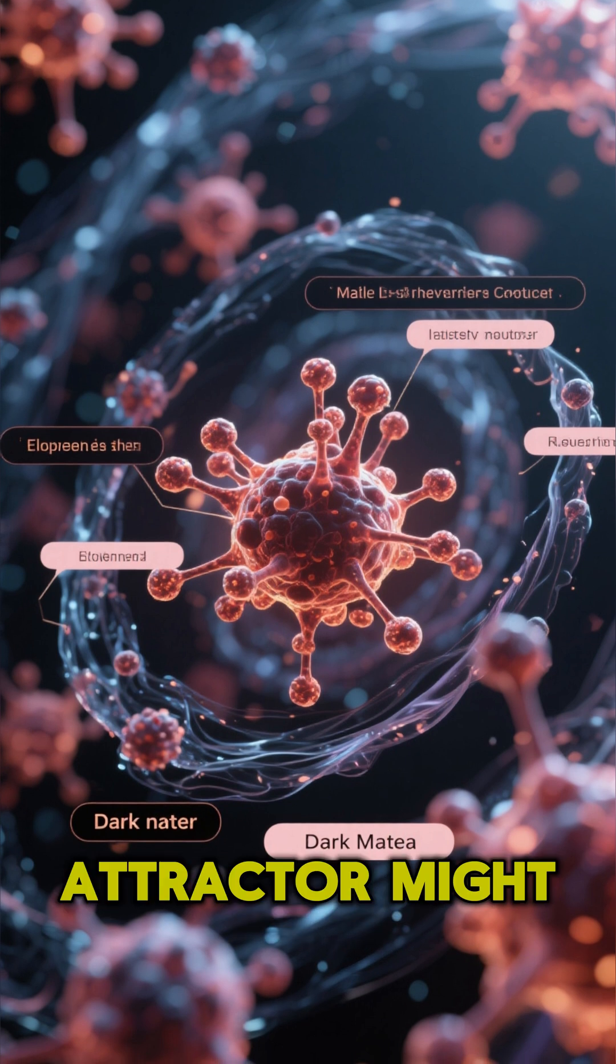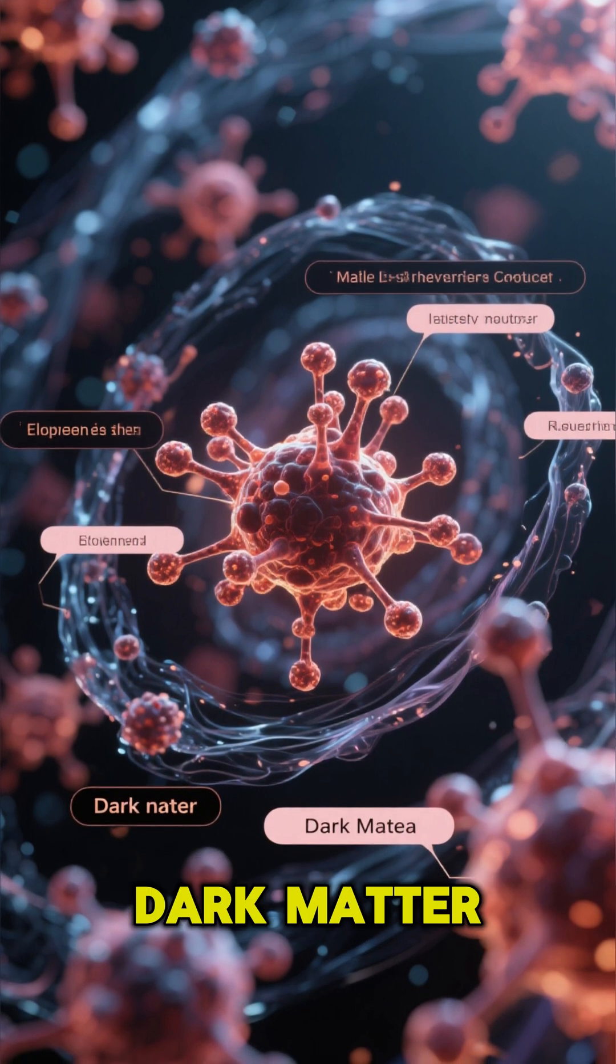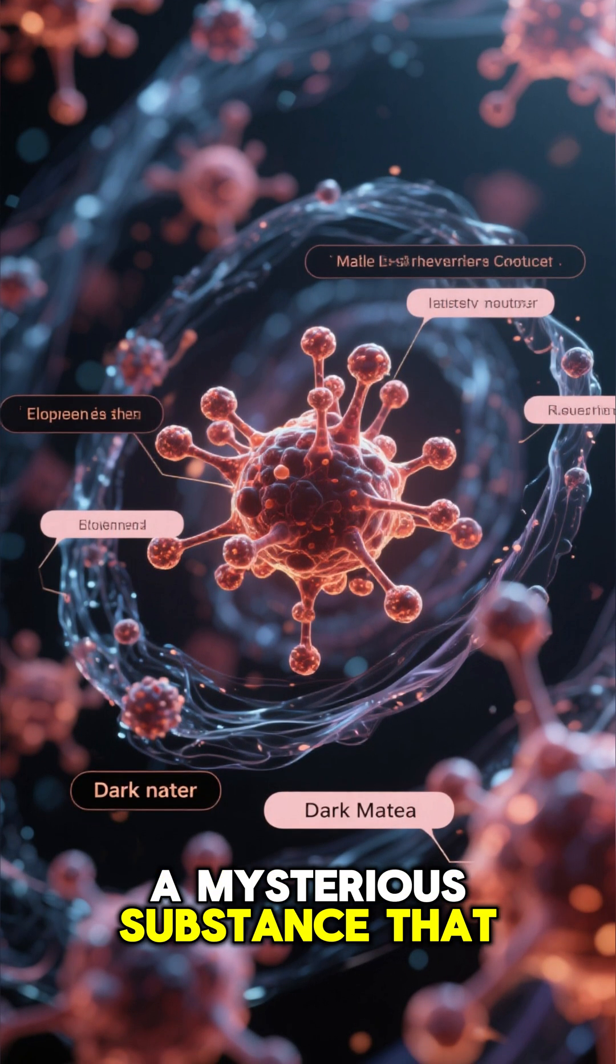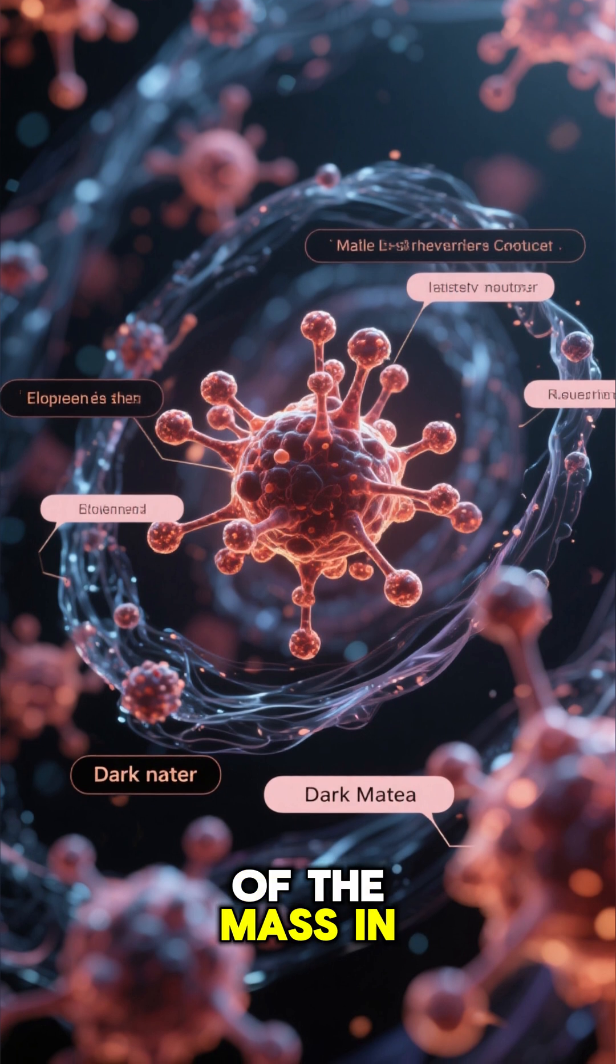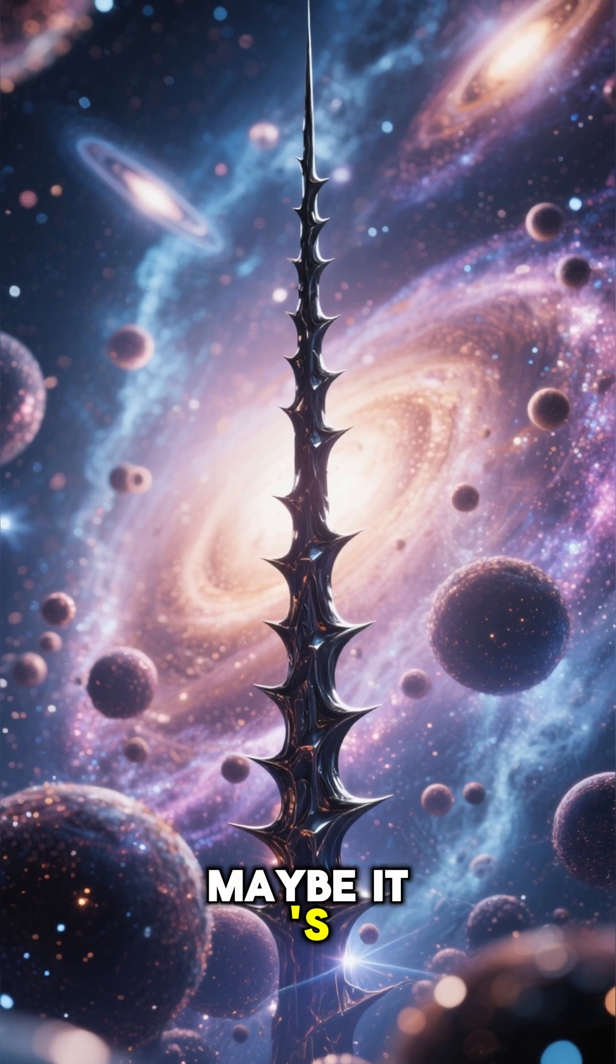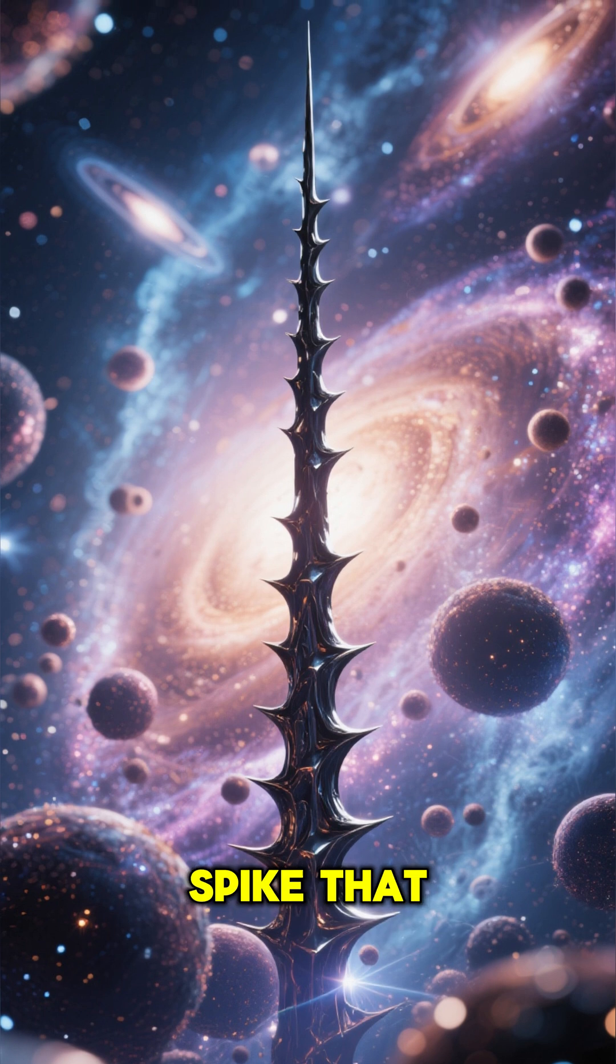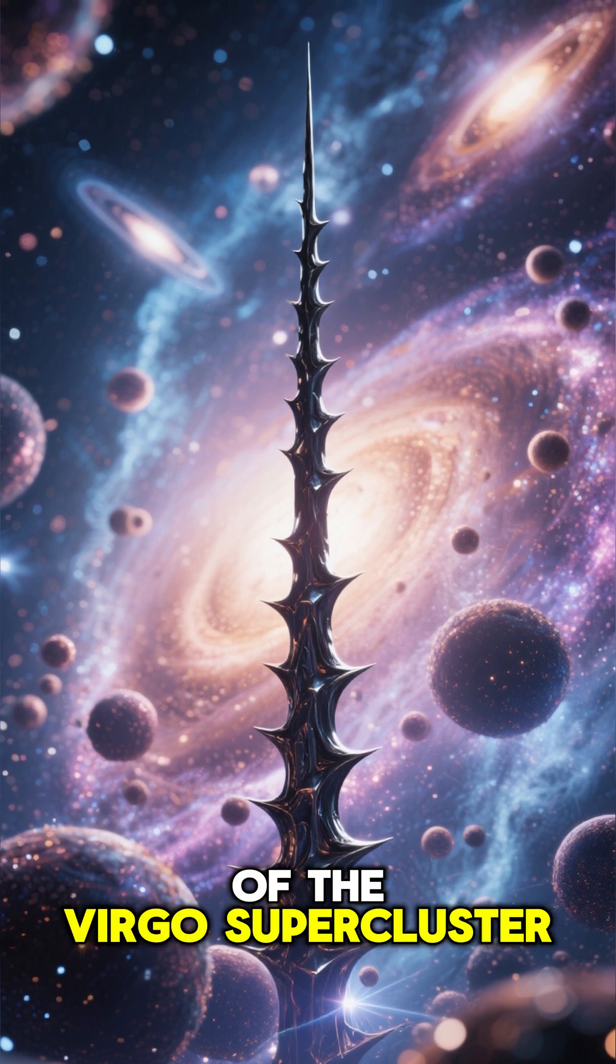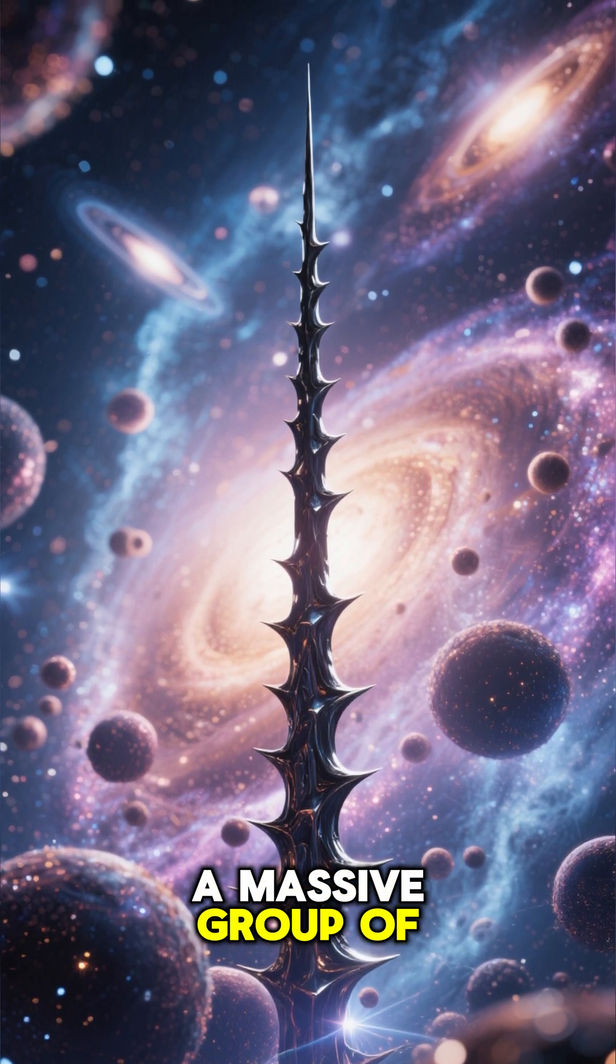Others believe that the great attractor might be dark matter. A mysterious substance that makes up a quarter of the mass in the universe, but we can't see or detect it in any way. Maybe it's a giant dark matter spike that's jutting out from the center of the Virgo Supercluster, a massive group of galaxies.